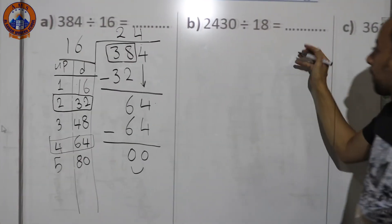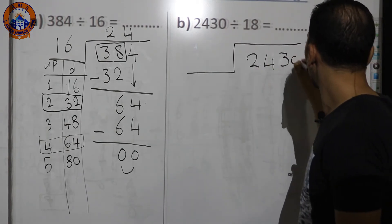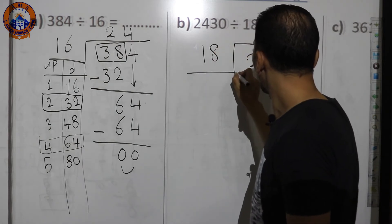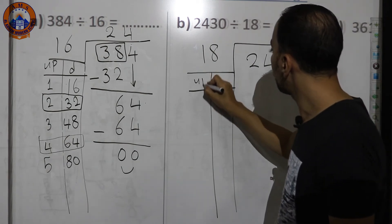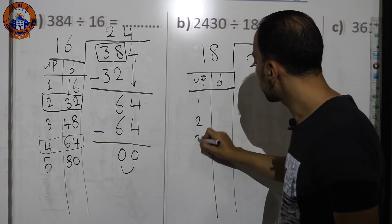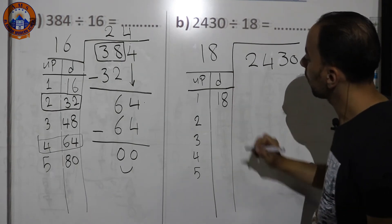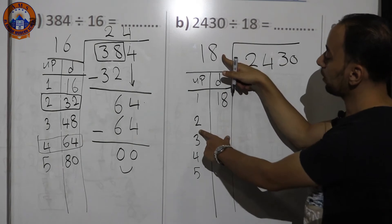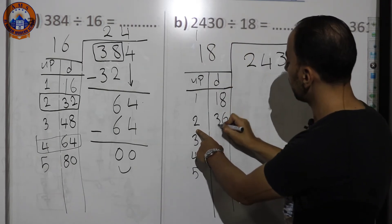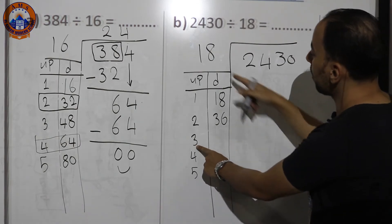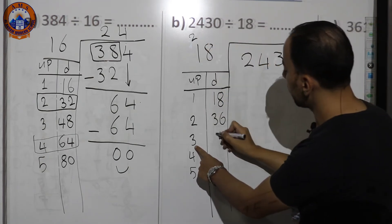Example B: 2430 divided by 18. First, make the times table for 18: 18×1=18, 18×2=36 (2×8=16, put 6 carry 1; 2×1=2 plus 1 equals 3), so 36. 18×3: 3×8=24, put 4 carry 2; 3×1=3 plus 2 equals 5 — so 54.